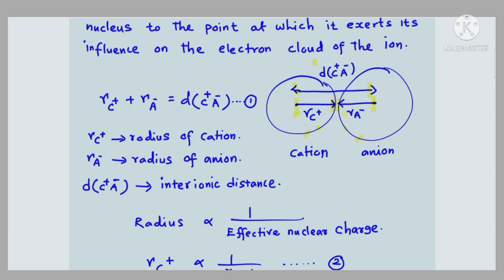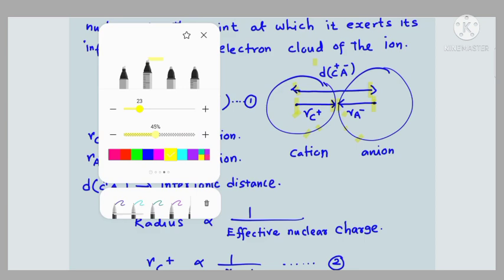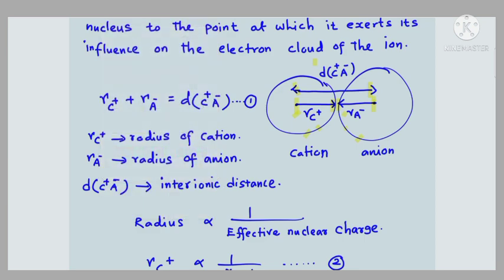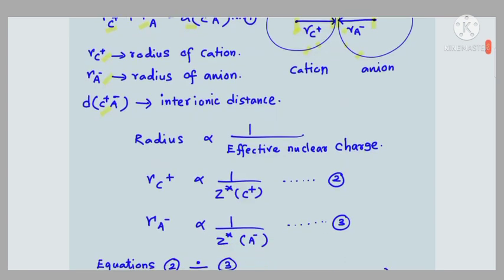Therefore we can write: the sum of the radius of the cation and radius of the anion equals the internuclear distance d(C⁺A⁻). This is equation number one. Here r(C⁺) is the radius of the cation, r(A⁻) is the radius of the anion, and d(C⁺A⁻) is the inter-ionic distance.